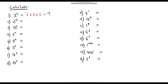The next one: 2 to the power of 4. Again we always start with 1 and this time multiply by 2 four times: 1 times 2 times 2 times 2 times 2. So 2 times 2 is 4, times 2 is 8, times 2 is 16.